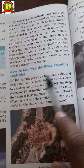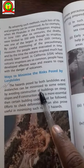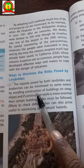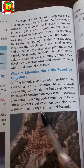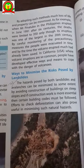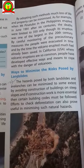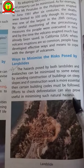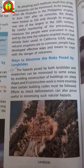Ways to minimize the hazard posed by landslides: the hazard posed by both landslides and avalanches can be minimized to some extent by avoiding construction of buildings on steep slopes. If construction works are necessary in such areas, certain building codes must be followed.